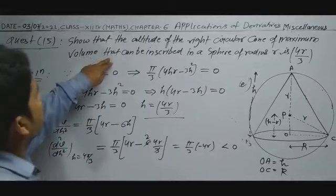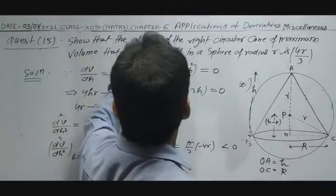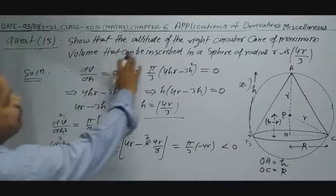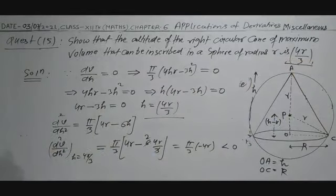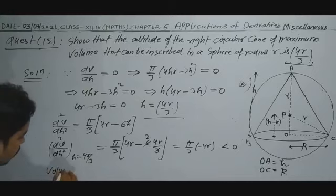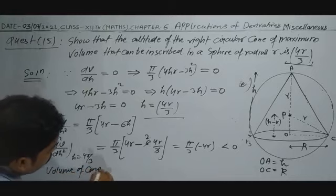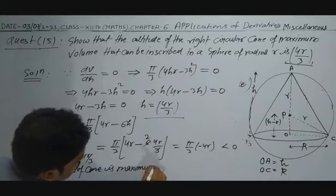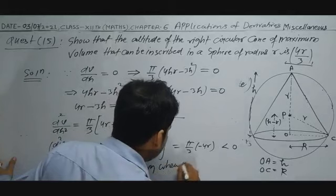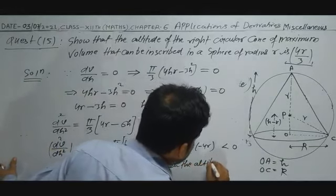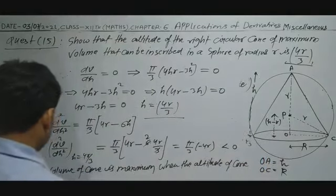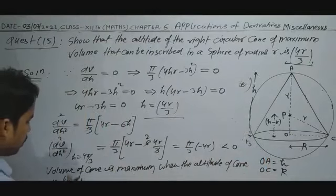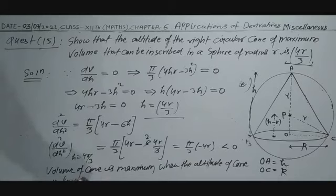This shows the volume of the cone is maximum when h = 4r/3. The altitude of the right circular cone of maximum volume inscribed in a sphere of radius r is 4r/3. This is the answer.